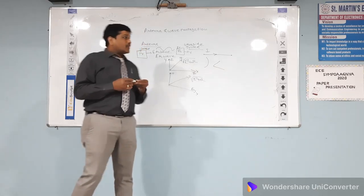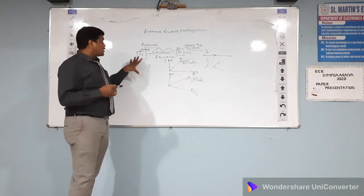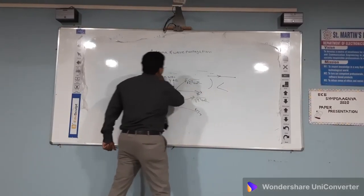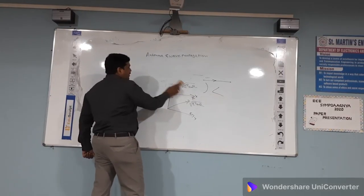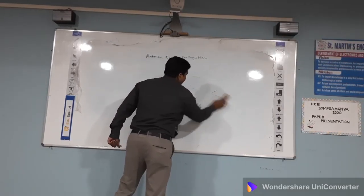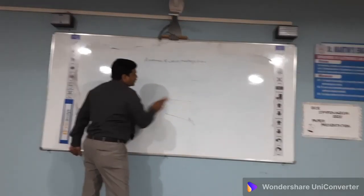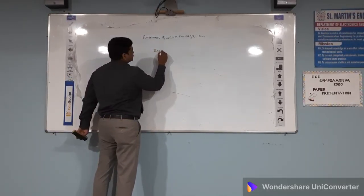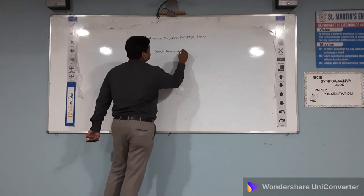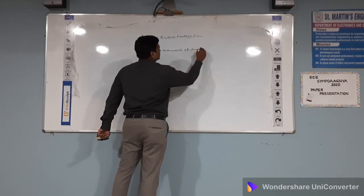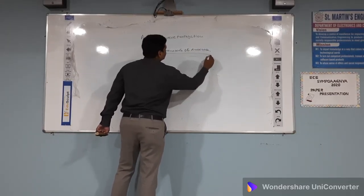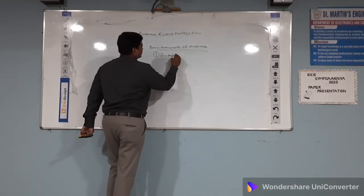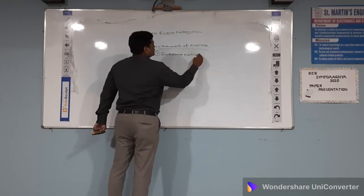This antenna should follow some basic parameters. When antennas are designed, they should follow these basic parameters. The first basic parameter is impedance matching.